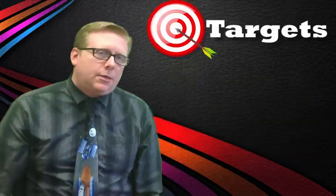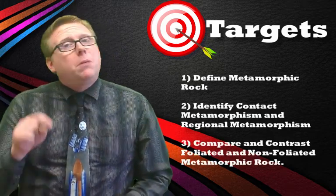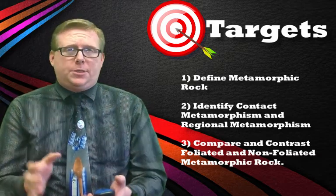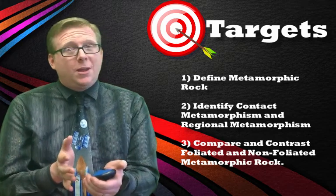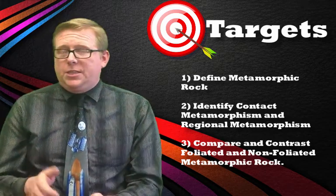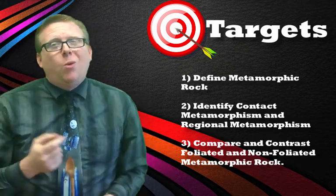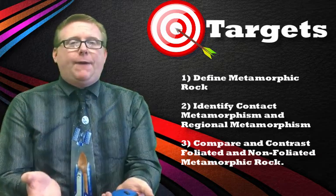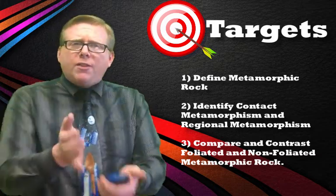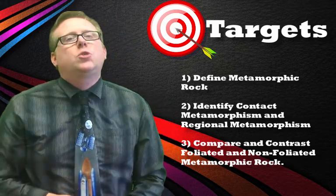In particular we're going to be doing three things. First, we're going to give you a definition of what metamorphic rock is. Then we're going to compare and contrast the different types — there's a type that can come from contact metamorphicism or regional metamorphicism. We're also going to look at what is a foliated and a non-foliated metamorphic rock so that you can identify them.